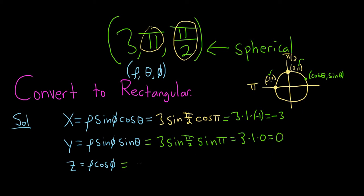And the last one is z, which is rho, which is 3, cosine of phi, so phi is pi over 2. Aha, this changes things, because the cosine of pi over 2 is 0. So this is 3 times 0. So this is equal to 0.